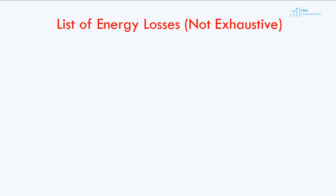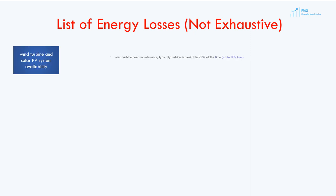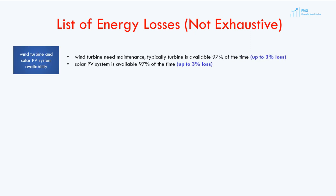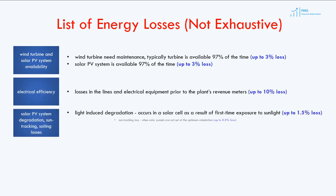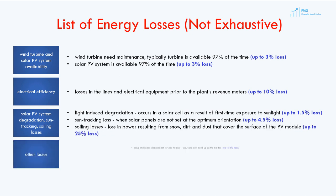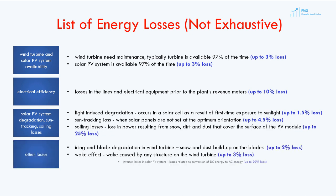We mentioned energy generation losses due to equipment downtime caused by maintenance — this is called turbine availability. In other words, the turbine is not available during maintenance and therefore an energy generation loss occurs. There are other losses, such as losses due to electrical efficiency, light-induced degradation, wake effect, and inverter losses.